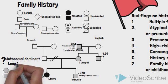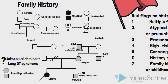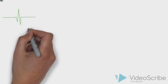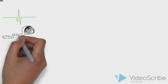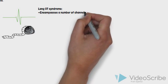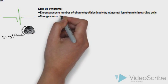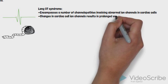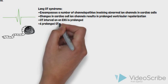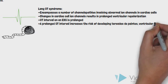On discussion with your preceptor, based on Louise's presentation and her family history, you are suspicious of a diagnosis of long QT syndrome, a condition with autosomal dominant inheritance. An EKG is ordered for Louise and demonstrates that her corrected QT interval is increased. Long QT syndrome is a term that encompasses a number of disorders known as channelopathies involving abnormal ion channels in cardiac cells. Changes in cardiac cell ion channels result in prolonged ventricular repolarization. As a result, the QT interval on an EKG is prolonged. As the QT interval gets longer, there is an increased risk of developing a dangerous heart rhythm known as torsade de pointes, which can lead to ventricular fibrillation and cardiac arrest.